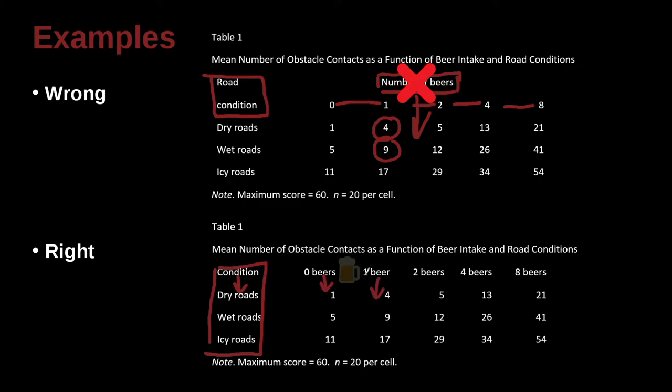So this is telling us one beer drunk resulted in a mean of four impacts on dry roads, nine obstacle impacts on wet roads, and 17 on icy roads. And then down here we have a nice note, maximum score 60, and the subsample of 20 per cell. So in each cell, we have 20 people, 20 participants. So I think the key here is keeping that column heading very clear.